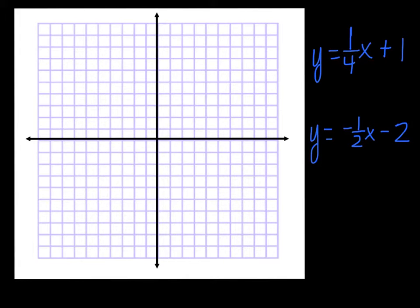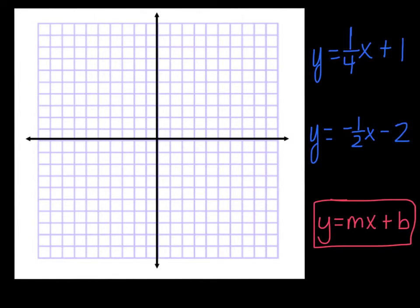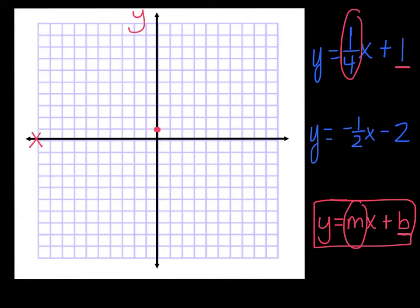As a quick refresher, when an equation is written in the form y equals mx plus b, you know it's going to make a line. The plus number here — that's the y-intercept. So at point one on the y-axis, I'll put my y-intercept. The m stands for the slope, so my slope is one-fourth. Remember, slope is rise over run.